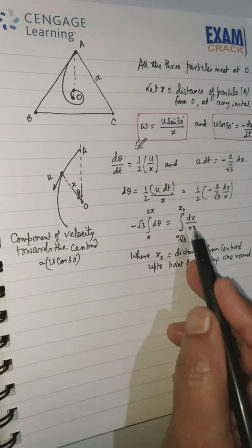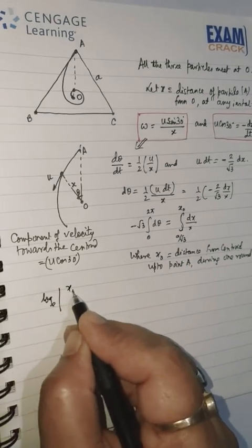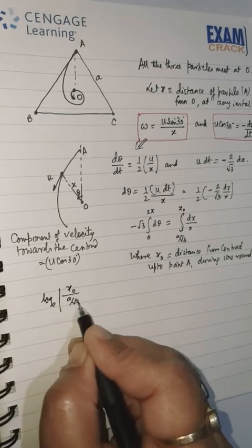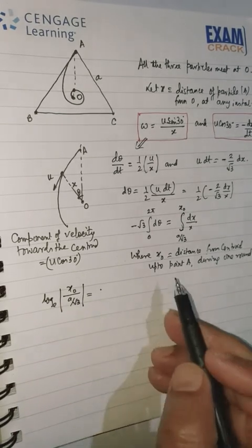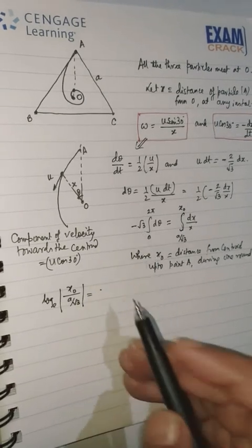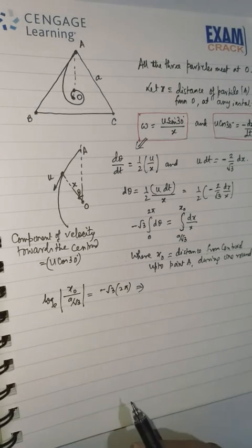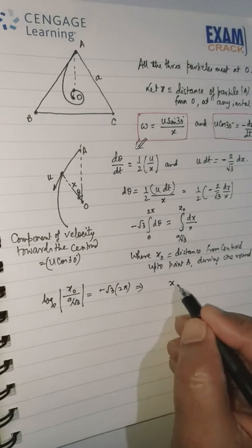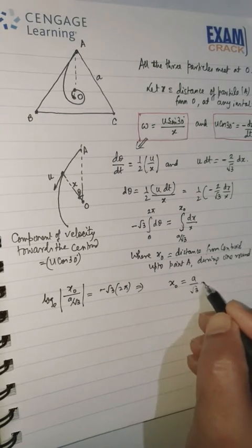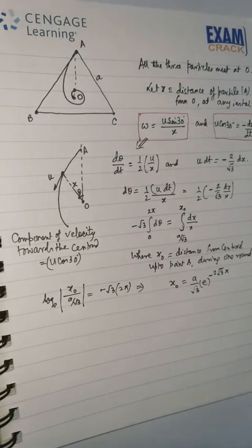So let us integrate this, put the upper and lower limits. We have log base e, it will be x₀ divided by A/√3. At the other side, it will be minus √3 times 2π. So it becomes e to the power. And we have x₀ equals A/√3 times e^(-2√3π). This is x₀. I hope this makes this clear.